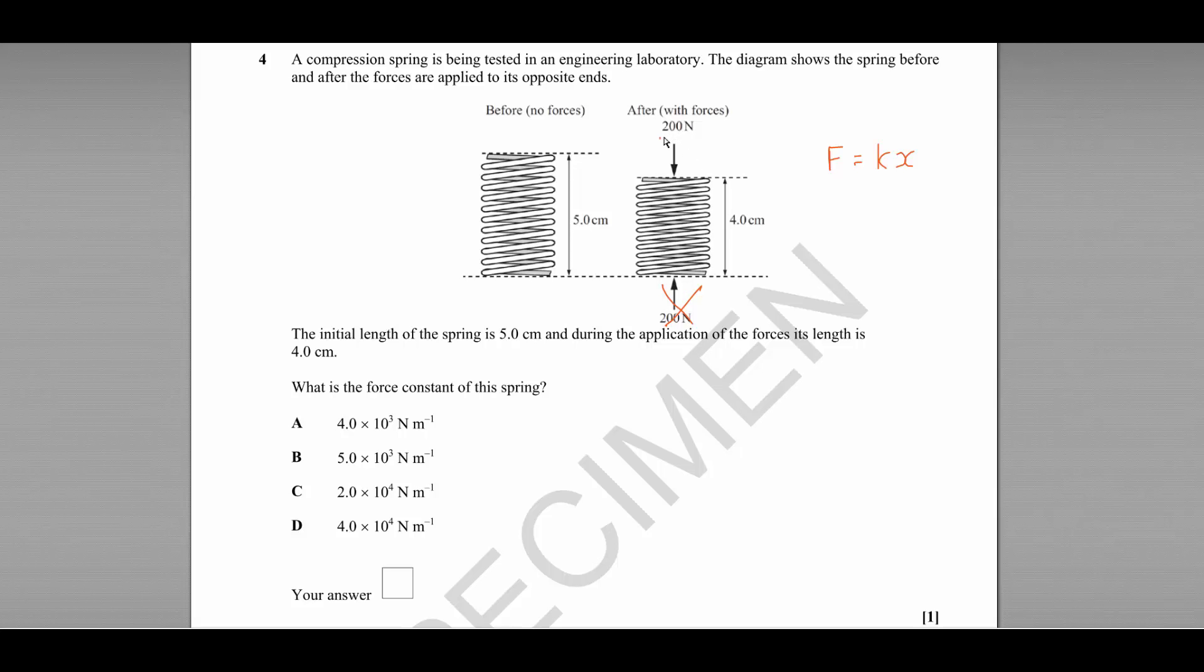So the force being applied here is actually 200 Newtons. So we can rearrange our equation to get K, the force constant, is equal to F force divided by X the extension. The extension is the original length take away the final length, in this case five take away four, so that's one centimeter which is one times ten to the minus two meters.